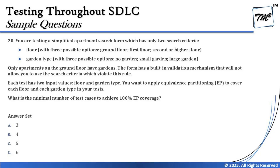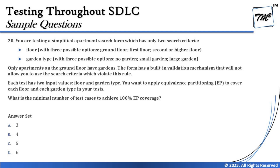Additionally, the form has a built-in validation mechanism that will not allow you to use search criteria that violate these rules. Imagine a drop-down for floor type: selecting ground floor shows two garden options; selecting first floor shows only one option, hard-coded to 'no garden'. At every single line you should note the constraints and scenario assumptions. The question asks you to apply equivalence partitioning to cover each floor and each garden type at least once.